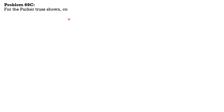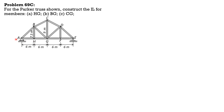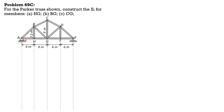For the Parker truss shown, construct the influence line for members HG, BG, and CG. Here is the given figure. There are only four panels, so it's easy to construct the reaction at A — it is 1, then 0 at E. These are the ordinates divided by 4: one-fourth, plus one-fourth, one-half, plus one-fourth, then plus one-fourth, one.